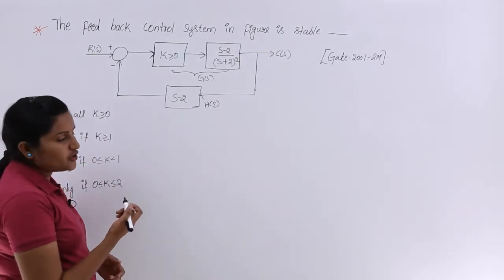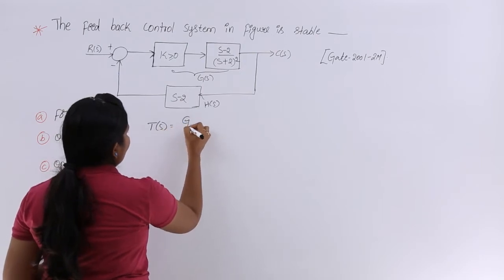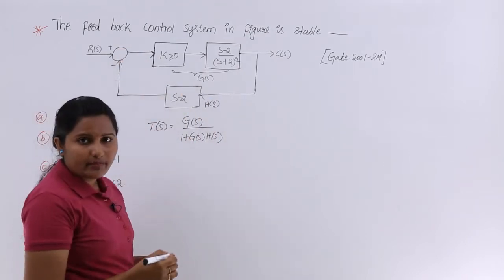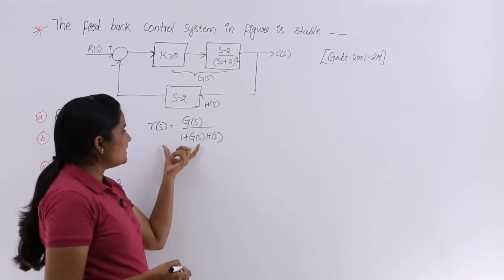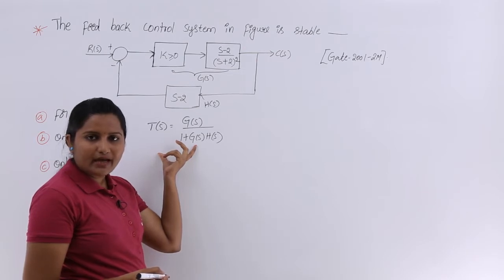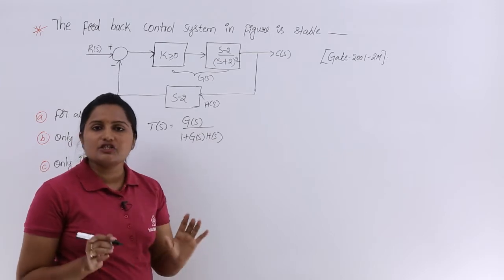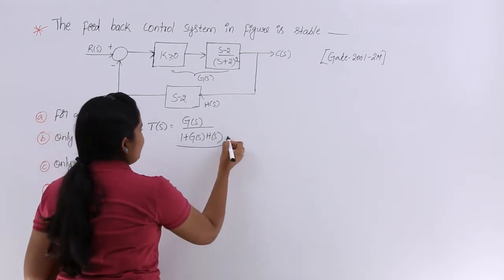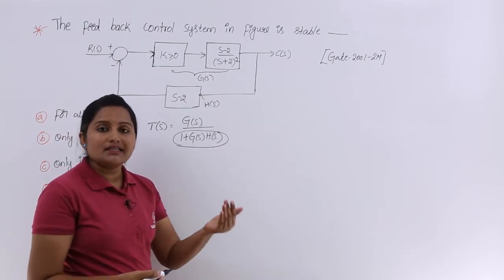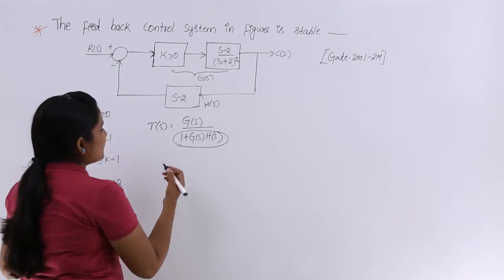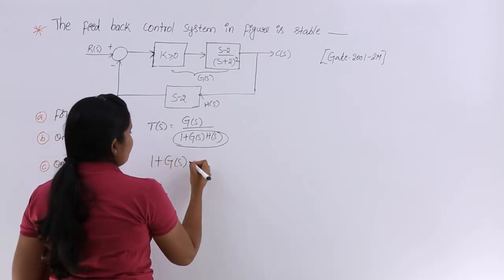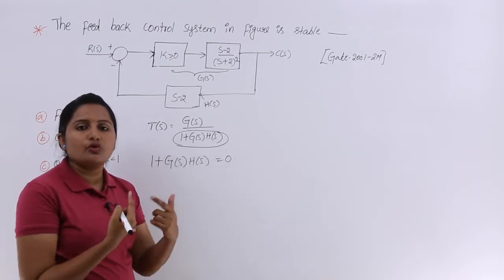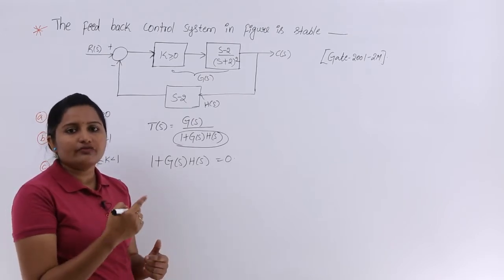The transfer function of a negative feedback control system is G(s) divided by 1 plus G(s)·H(s). The characteristic equation comes from the denominator — specifically, 1 + G(s)·H(s) = 0, where G(s) is the open loop transfer function and H(s) is the feedback transfer function.